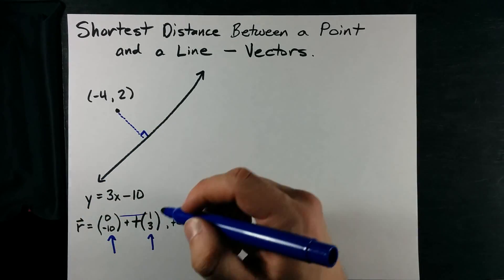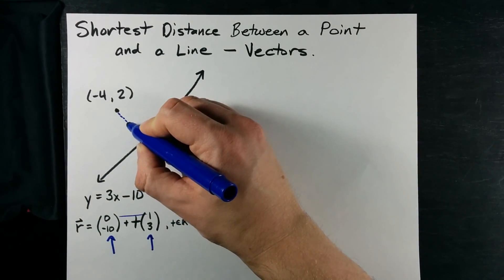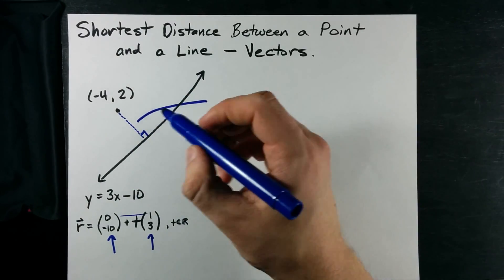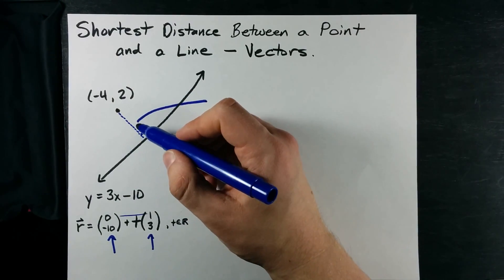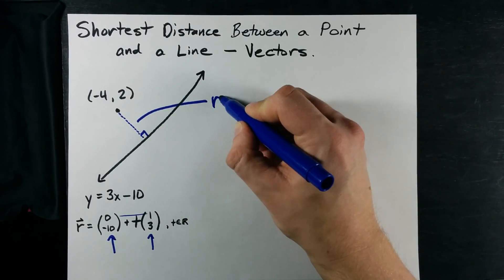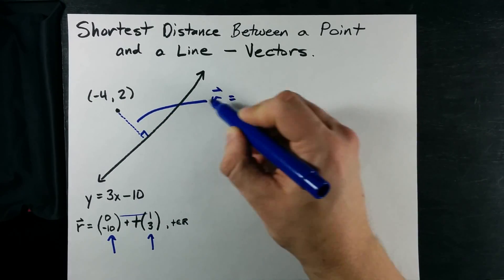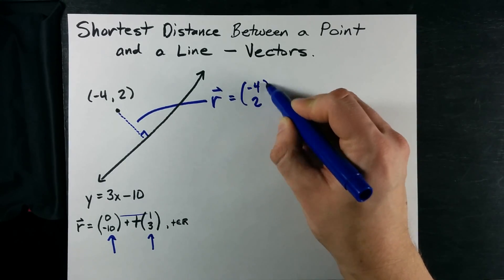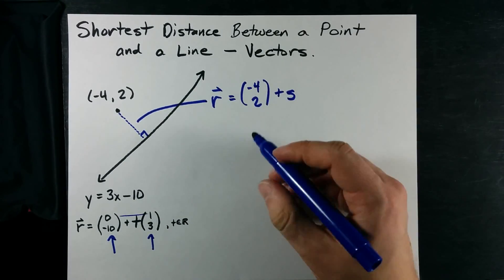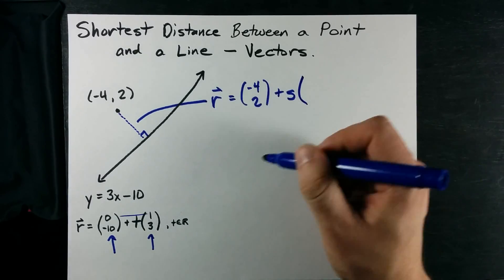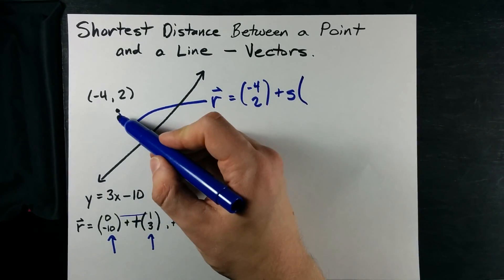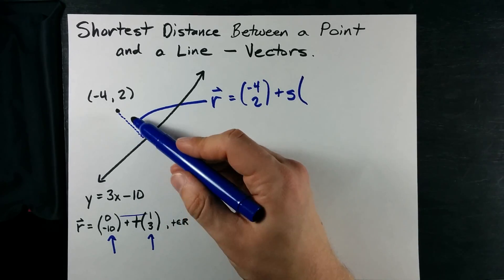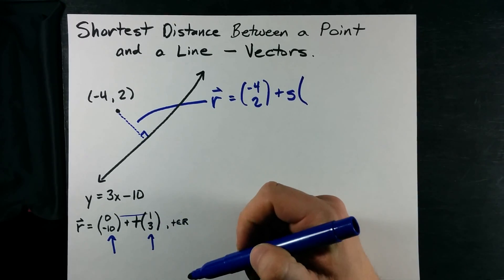Where I'm going with that is that this line segment also has a vector equation. And what's awesome about this vector equation is that we've already been given a position vector. That's negative 4 comma 2. I'm going to give it a different parameter s.